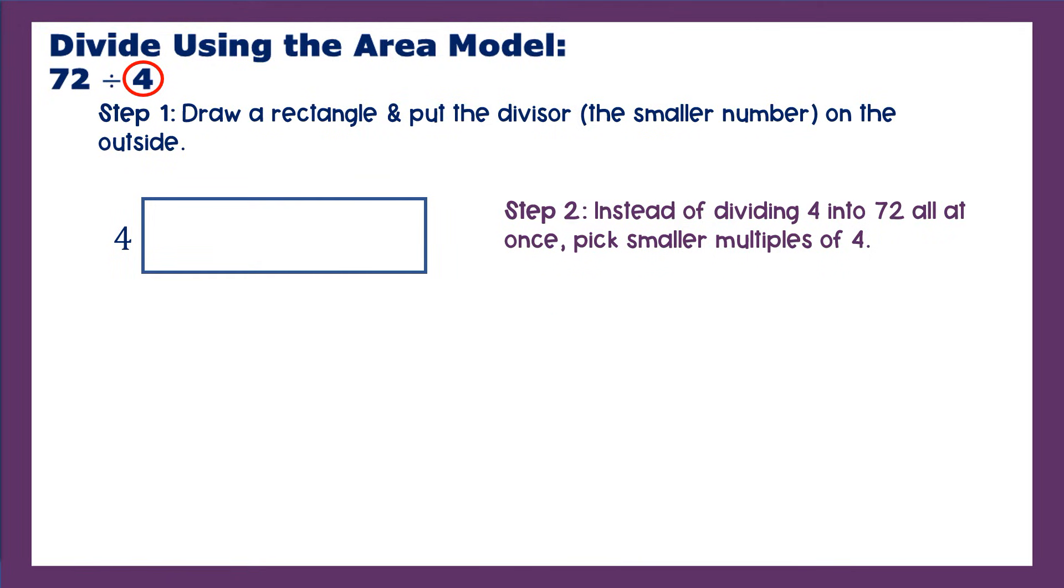Where's a good place to start? A good place to start is by multiplying by 10. Everybody knows their 10s times tables, so let's do that. 4 times 10 is 40. 40 is not 72, but it's a good chunk of 72. So we're going to start there. We're going to say I don't know what you multiply by 4 to get 72, but I do know that 4 times 10 is 40 and that's on the way to 72.